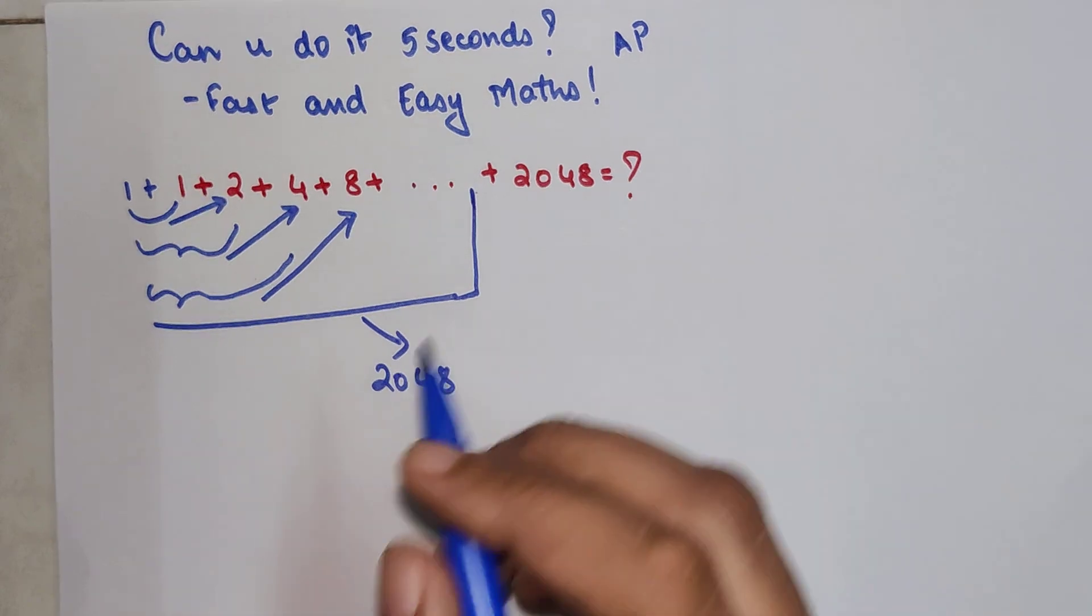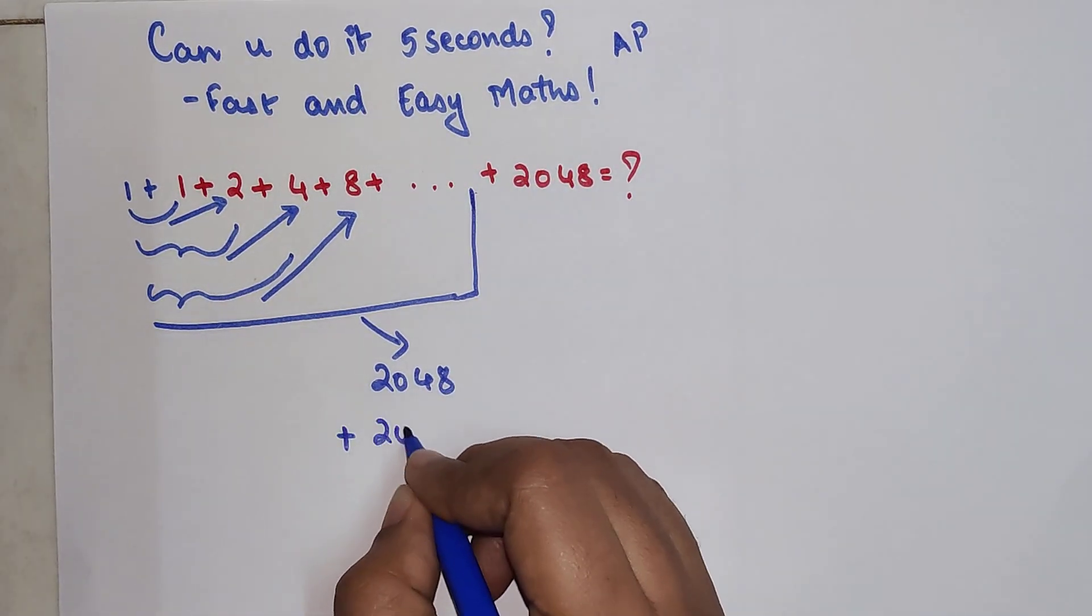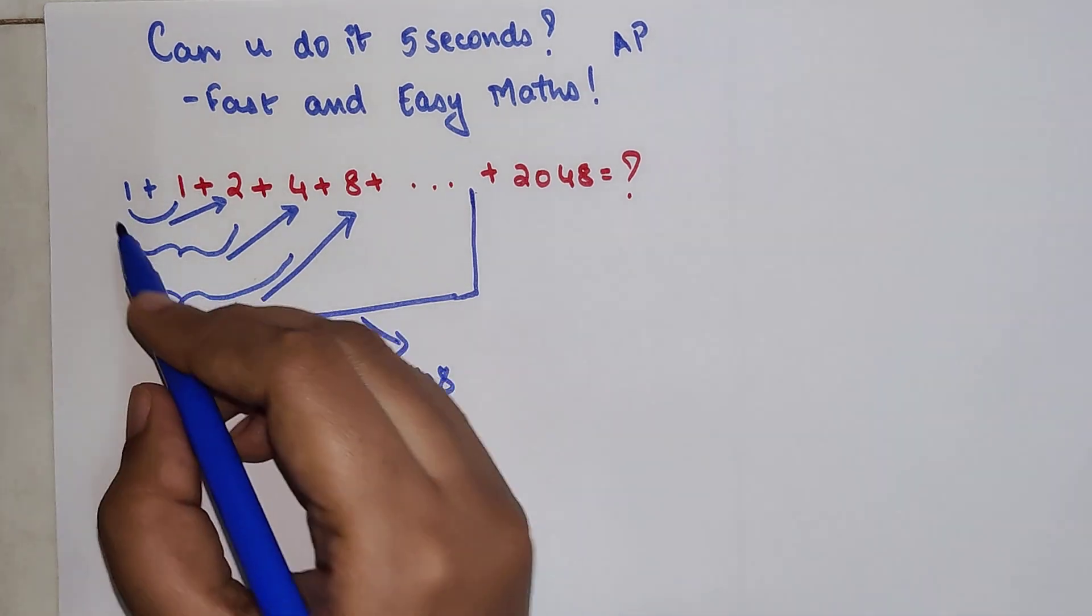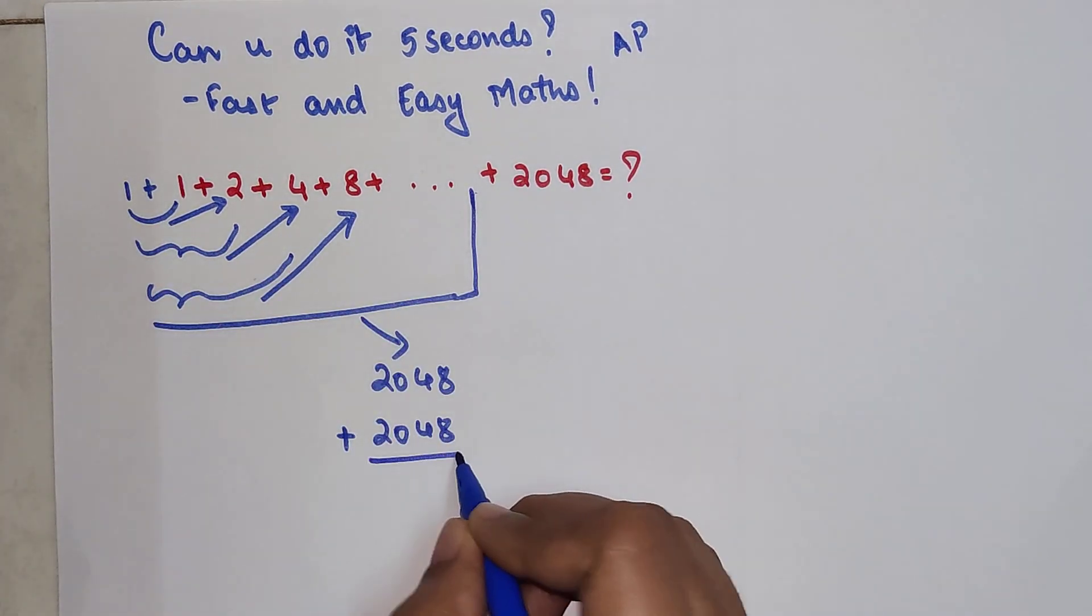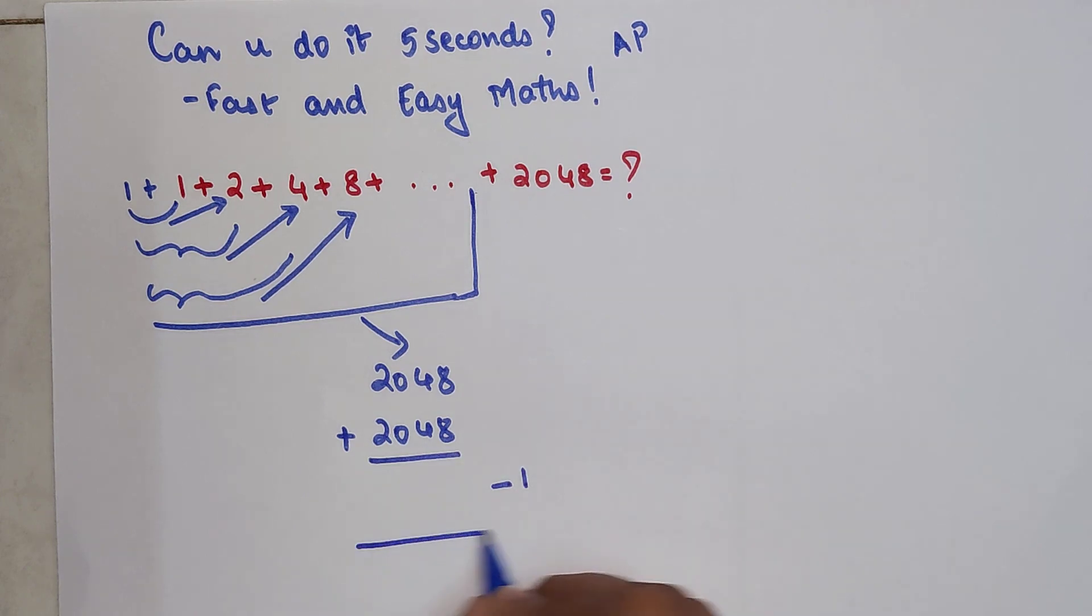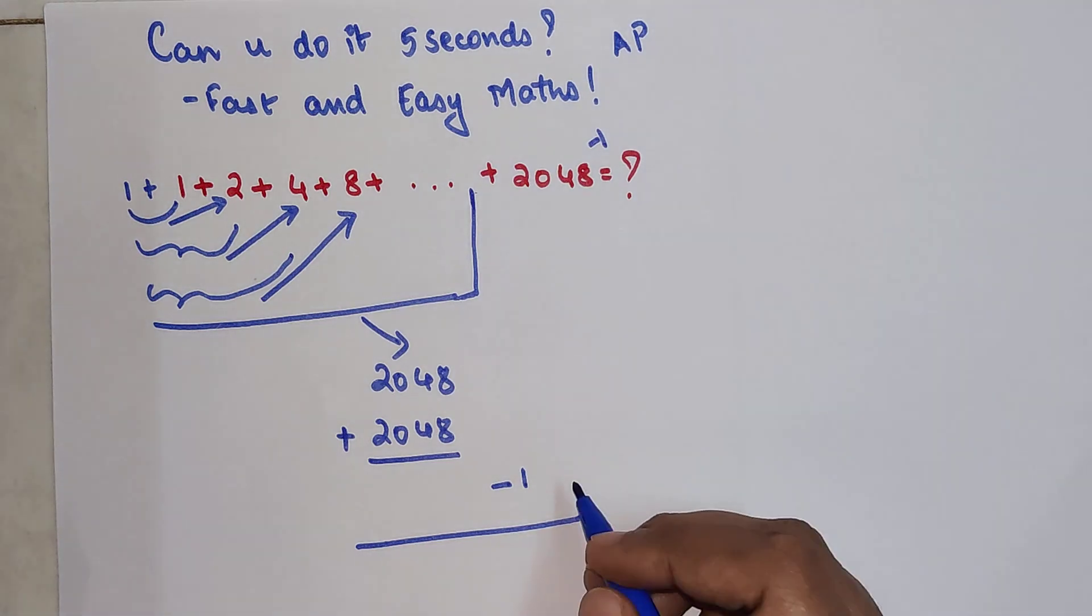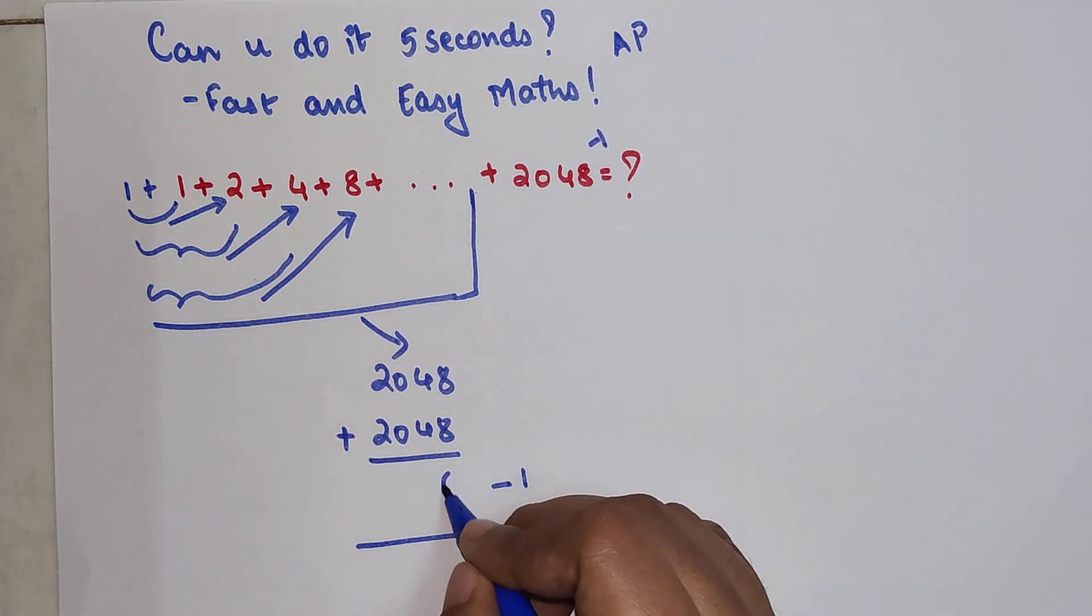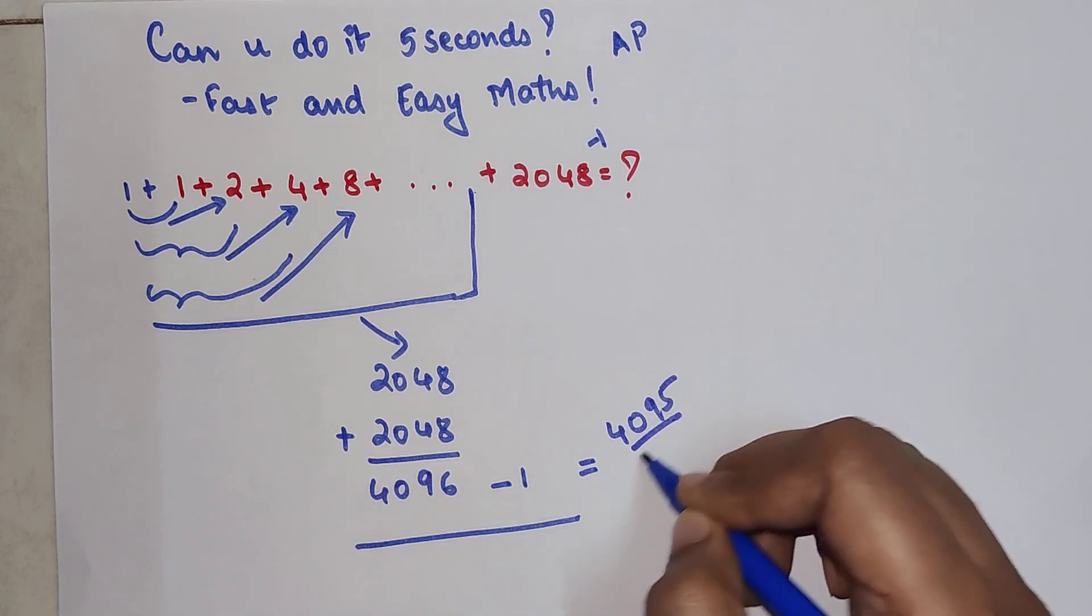Now understand, you have this 2048 which has to be added. But since you added 1 in the beginning, whatever is your final answer, you're going to subtract 1 from it. So here you get 2048 + 2048 = 4096, minus 1, your final answer is 4095.